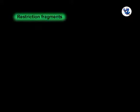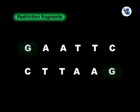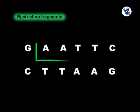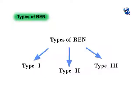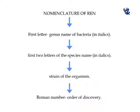A restriction fragment is a DNA fragment resulting from the cutting of a DNA strand by restriction endonucleases (RENs) — a process called restriction. There are three main types of RENs: type 1, type 2, and type 3, with slightly different modes of action. Nomenclature: restriction endonucleases are named with reference to the bacteria from which they are isolated. The first letter in italics indicates the genus, followed by two letters for the species, then the strain, and finally a Roman numeral indicating the order of discovery.